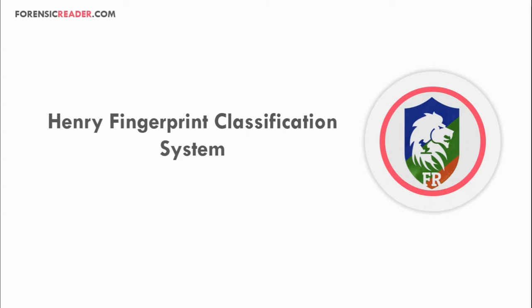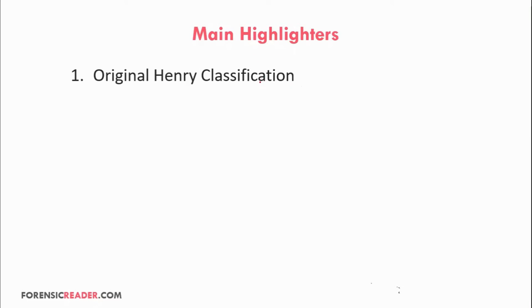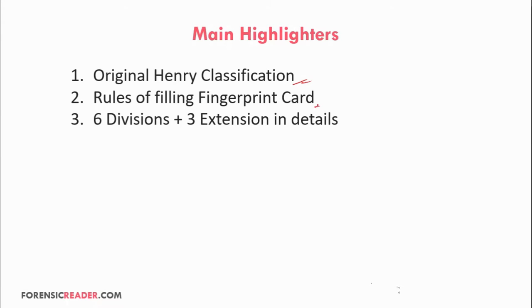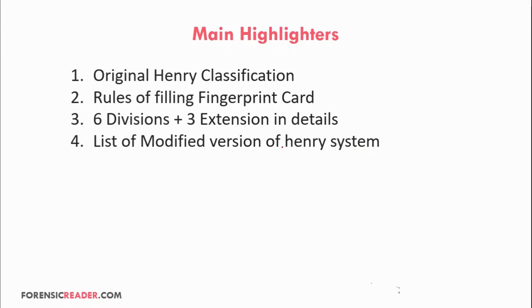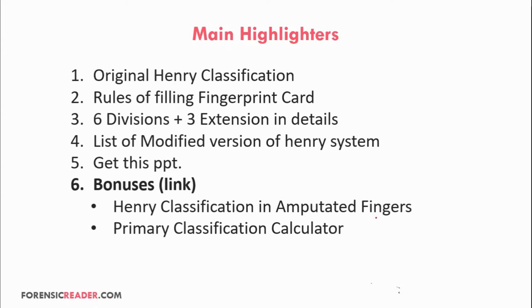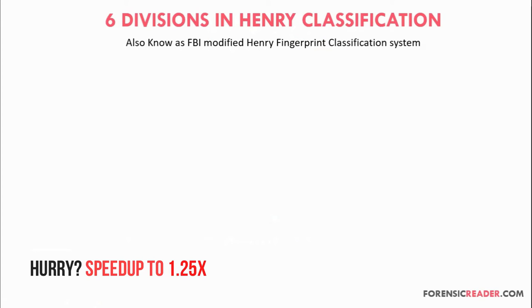Pay close attention to this video because I want to show you how you can calculate the Henry fingerprint classification value. This video is more than enough to know how to calculate all six divisions of Henry. The main highlights of this presentation are: the original Henry classification system, rules for filling fingerprint cards, the six divisions and three extensions used by FBI, modified versions of Henry system used by federal agencies, and how amputated fingers are classified. You will also get a calculator to calculate the primary classification value of any 10-digit card.